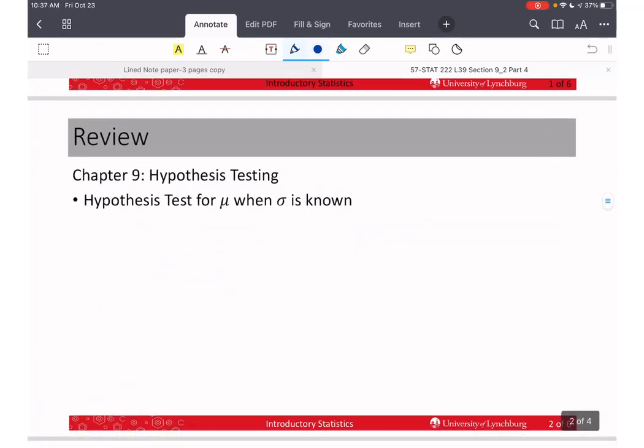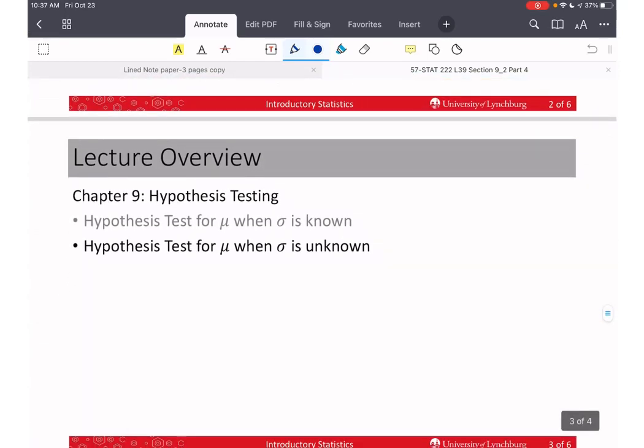In the previous three videos, we reviewed section 9.1, which is how to test hypothesis for the population mean mu when we do know sigma, the population standard deviation. As I've mentioned before, this is not a very realistic case. In real life, what we usually encounter is testing for the population mean when we do not know sigma. So what we have to use is S, the sample standard deviation. That's what we will start in this video for section 9.2.